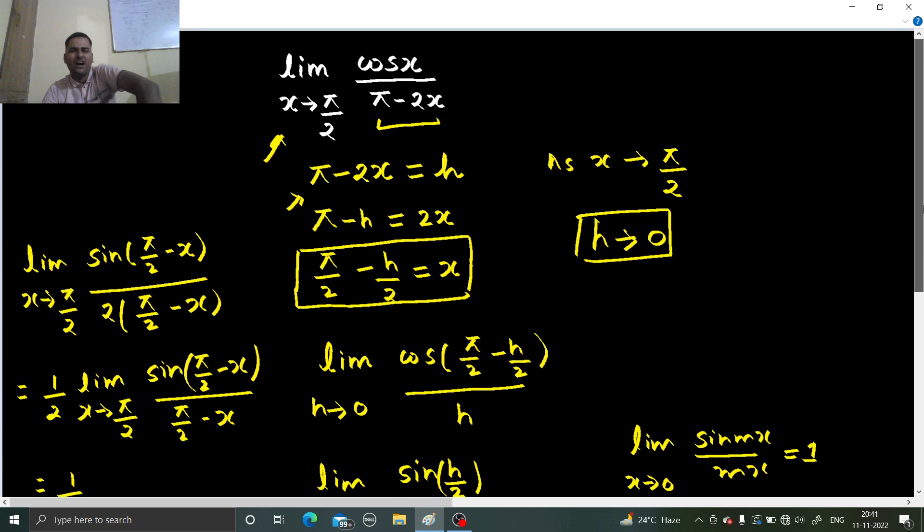We should be ready. Another one more method is there if you want. We can discuss that also because if you look at the form at x tending to pi by 2, it is a 0 by 0 form. So we can use the L'Hospital rule.